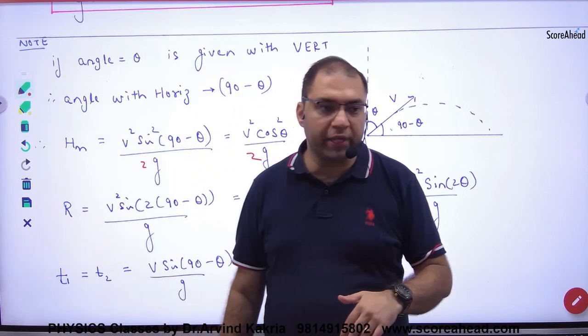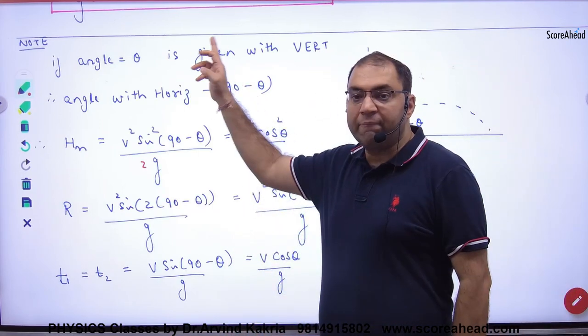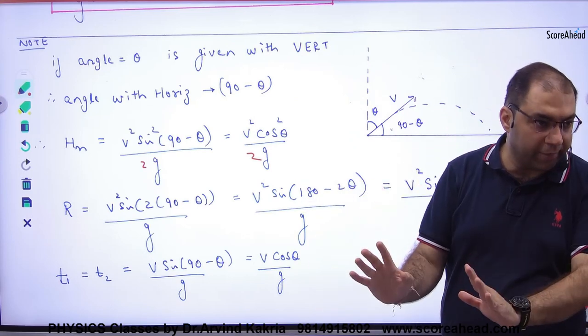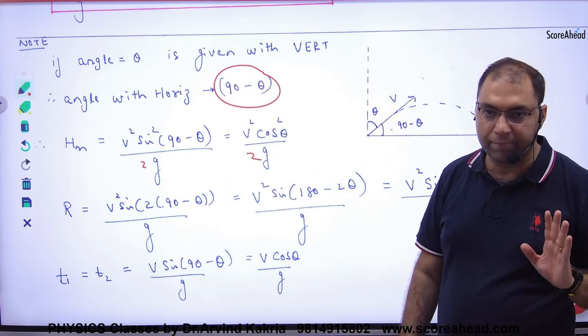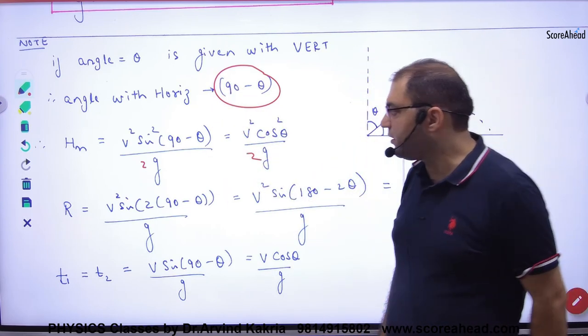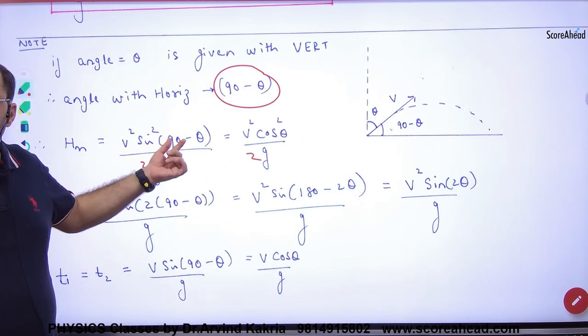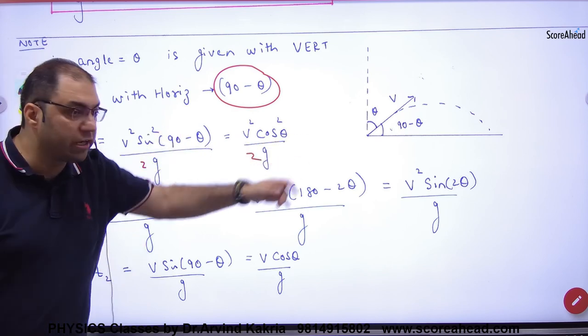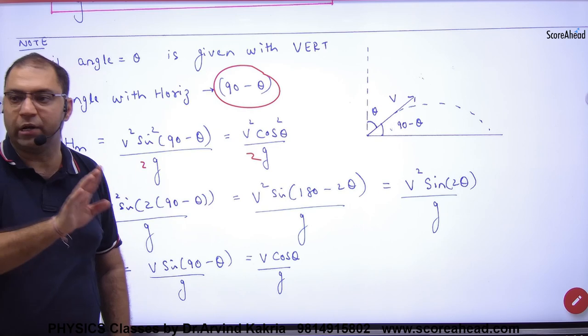But the formula is used when the angle theta is with horizontal. Now, in this case, the angle is 90 minus theta. So, wherever you have the angle theta given in the formula which we have derived, what will we replace there? 90 minus theta. In the formula of maximum height, V square sin square theta by 2G. But not theta here. Who will replace theta? 90 minus theta. So, what is the sin of 90 minus theta? Cos. So, the answer is V square cos square theta by 2G. Clear?